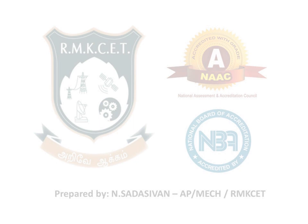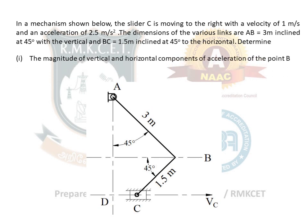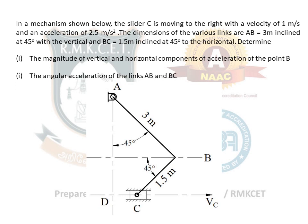Let us do a problem on a slider and crank mechanism that is a little bit different from the conventional one. In the mechanism shown below, the slider C is moving to the right with a velocity of 1 meter per second and an acceleration of 2.5 meter per second square. Dimensions: AB equals 3 meter inclined at 45 degrees with the vertical, and BC equals 1.5 meter inclined at 45 degrees to the horizontal. Determine the magnitude of vertical and horizontal components of acceleration at point B, and the angular acceleration of links AB and BC.